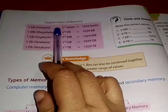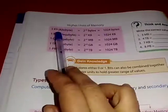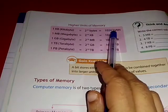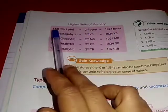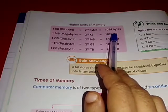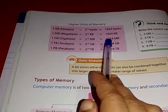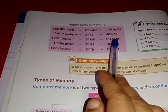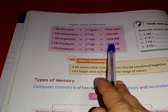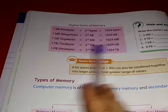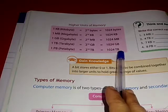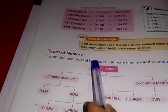Higher units of memory: 1 KB is equal to 1024 bytes. 1 MB is equal to 1024 KB. 1 GB is equal to 1024 MB. 1 TB is equal to 1024 GB. 1 PB is equal to 1024 TB.